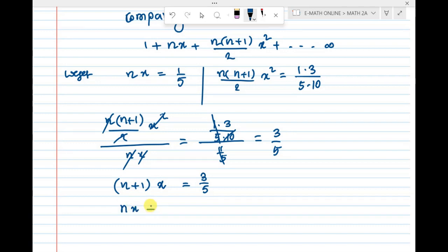Multiply, nx plus x which is equal to 3 by 5. So 1 by 5 plus x equal to 3 by 5. The value nx is equal to 1 by 5.